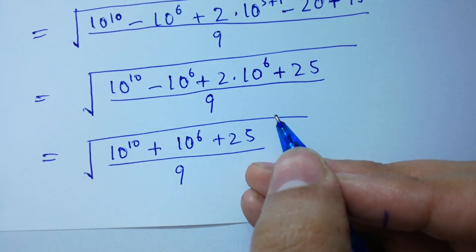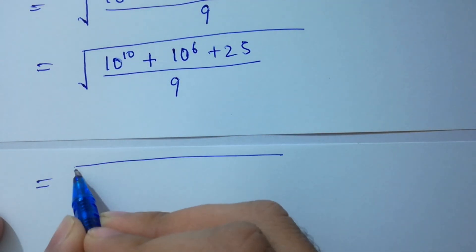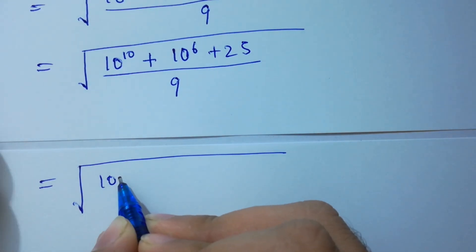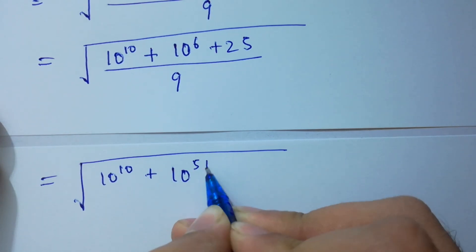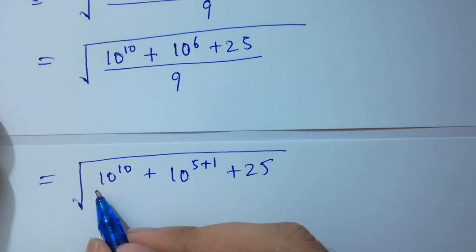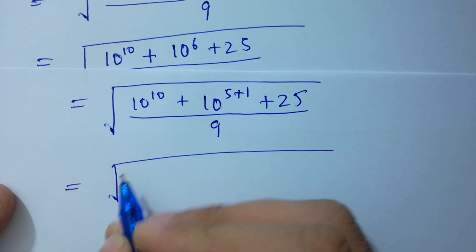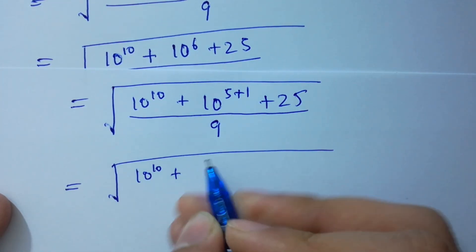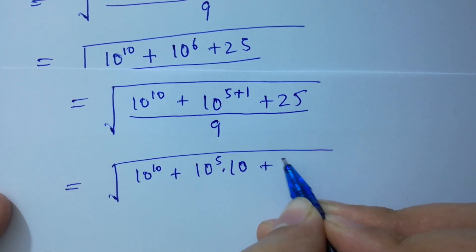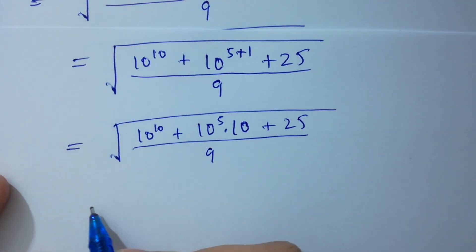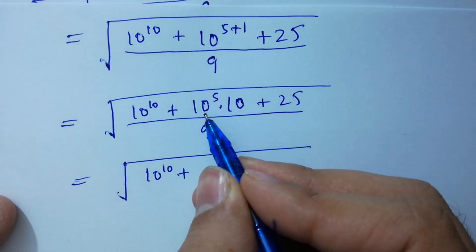Next: we have 10 to the power 10 plus 10 to the power 6, which can be written as 10 to the power 5 plus 1, plus 25 as it is over 9. And next: 10 to the power 10, plus 10 to the power 5 times 10 to the power 10, as it is, plus 25 over 9.